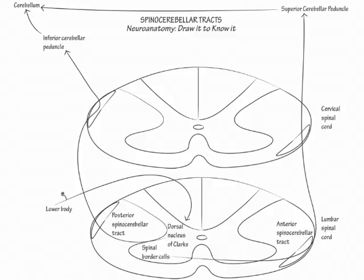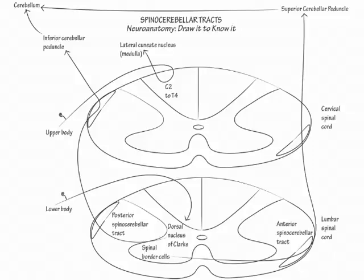Now show upper body fibers from T4 to C2 enter the posterior columns of the cervical spinal cord and form their primary synapse in the lateral cuneate nucleus of the medulla, where they become the cuneocerebellar tract. The cuneocerebellar tract is the upper body equivalent of the posterior spinocerebellar tract. Show the cuneocerebellar fibers pass through the ipsilateral inferior cerebellar peduncle to enter the cerebellum.